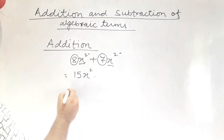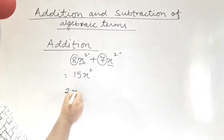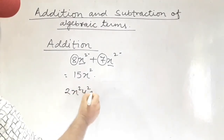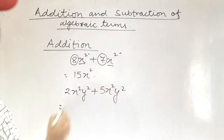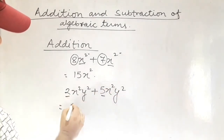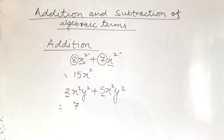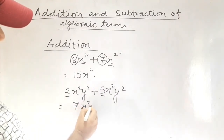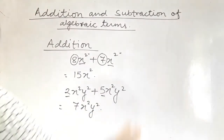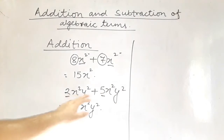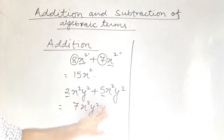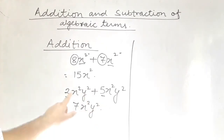Another example: 2x squared plus 5x squared. Add the coefficients: 2 plus 5 equals 7x squared. The base and power remain the same. Most students make the mistake of adding the base and power too, writing 7x power 4, which is totally wrong. We should add only the coefficient.